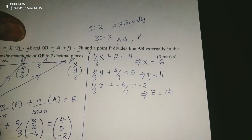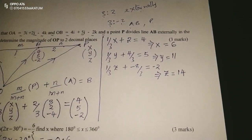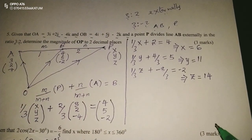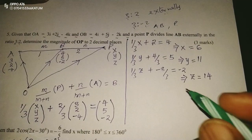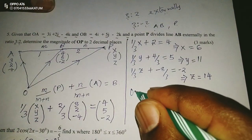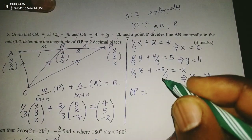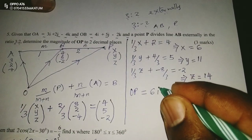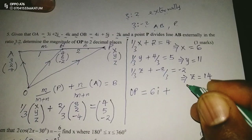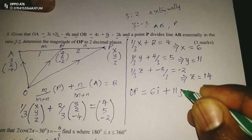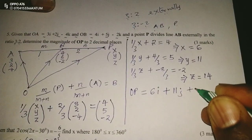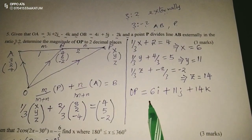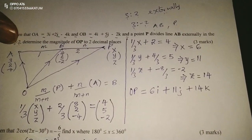With this, we can say now, the position vector of P, that is vector OP, in simpler terms, now will be equal to 6i plus 11j plus 14k. So this is the position vector of P.